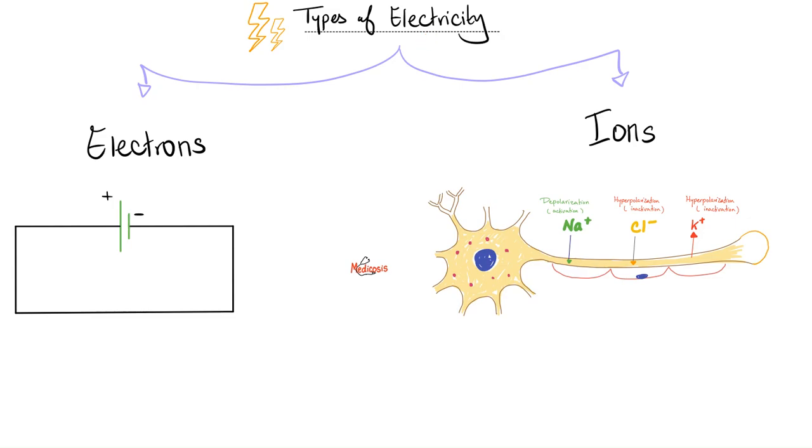Types of electricity: the electricity you studied in physics was mostly about electrons. But in your body, we're talking about ions, electrolytes—sodium, chloride, potassium, calcium, etc. Which one is faster? Of course, the electrons. The electricity flows from the electrical generator to your home very quickly, way faster than the flow of electricity in your nerves.